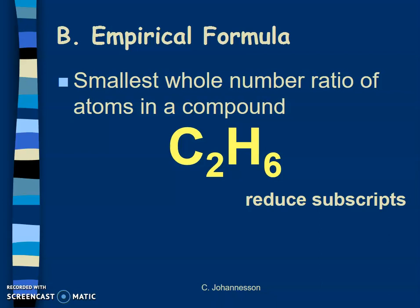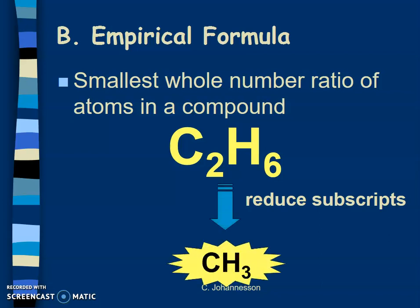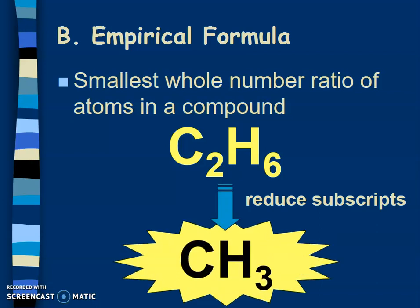For example, if you have C2H6, both 2 and 6 can be reduced because they have numbers in common. You can divide both of them by 2 to reduce their subscripts to CH3.